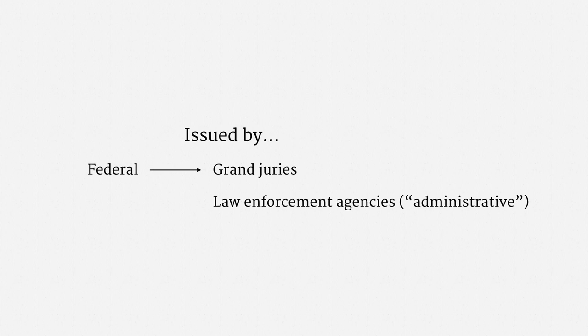For our purposes, there are three main contexts in which subpoenas are issued. The first is when a grand jury is investigating possible criminal activity. As we covered in the last part, grand juries evaluate evidence before a criminal prosecution has commenced, and largely act at the direction of prosecutors. The second common source of a subpoena is a law enforcement agency. These are usually called administrative subpoenas. In the federal system, the grand jury subpoena is the default. In many states, by contrast, administrative subpoenas are the norm.